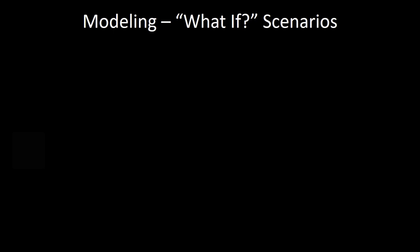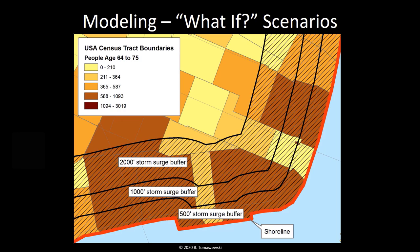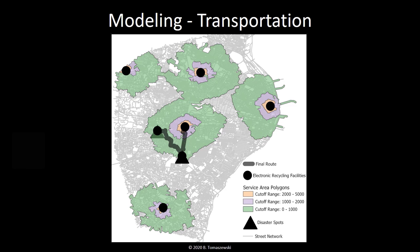GIS is also a very powerful tool for modeling what-if scenarios. Much like model trains and cars give us a scale representation of a real world entity, modeling in the context of GIS is the idea of using GIS to simulate conditions in the real world. For example, a GIS-based model could be developed to simulate possible storm surge conditions in outcome scenarios. Another very powerful use of GIS modeling techniques is the modeling of transportation networks and scenarios related to logistics and transportation planning. In this image, you see the results of a transportation modeling analysis examining where electronic debris originating from disaster spots can be transported to recycling facilities within certain service areas.